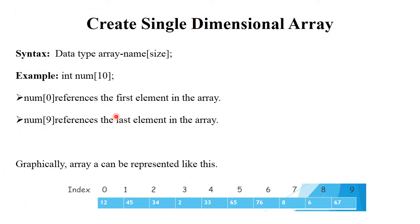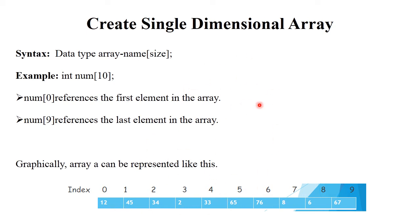Here is an example of single dimensional array. Data type is integer, array name is 'num', and size is 10. 'num' is the array name of type integer, and there are a total of 10 elements stored. As seen in this figure, indices go from 0 to 9. Array always starts with index 0. So elements are stored from num[0] to num[9]. num[0] references the first element and num[9] references the last element. This graphical representation shows array indices and array elements.